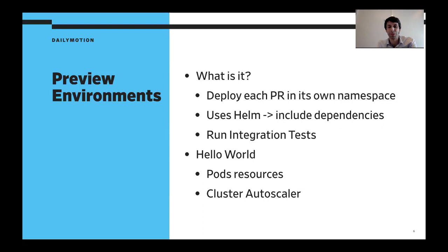You can run real integration tests in total isolation from other pull requests, giving you great confidence in what you're building before merging to master. You just need to define resource requests for your pods so the Kubernetes scheduler finds a good node with enough resources. If there aren't enough resources, you can use a cluster autoscaler — for example on Google Cloud it works very well, spinning up a new node in about two minutes.